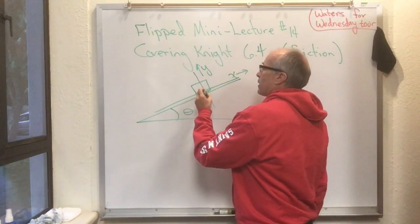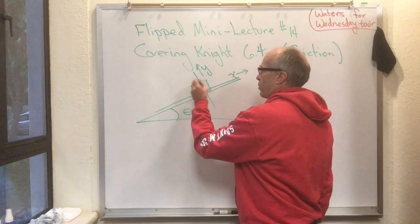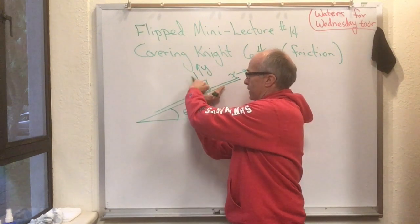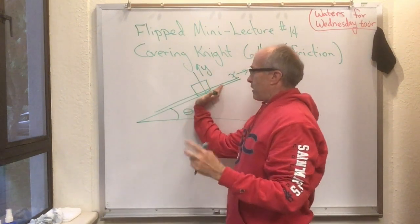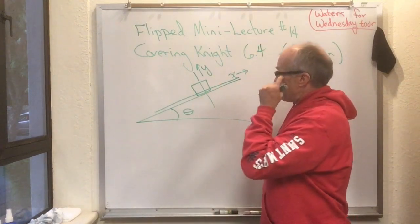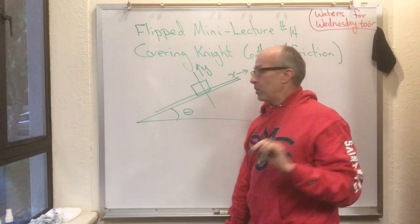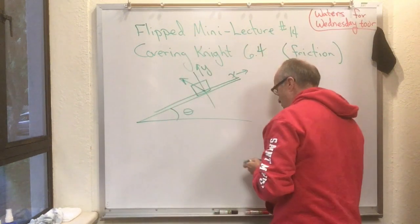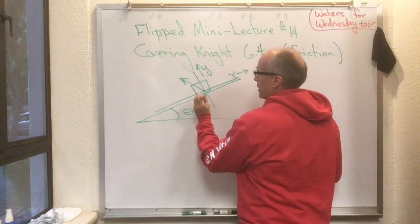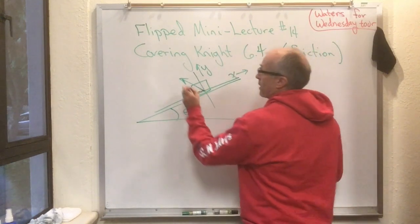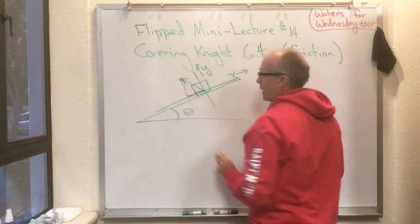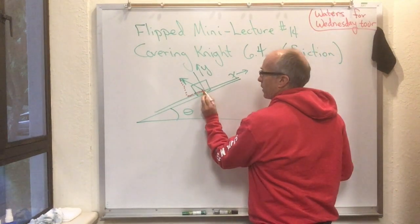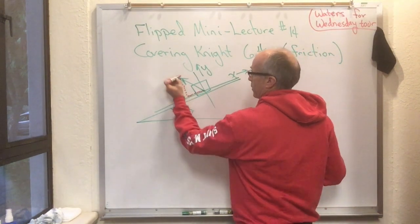The plane is going to push on the box somehow or other. The plane is in contact with this box and it's going to push in some direction depending on what the box is doing. But we can always choose to resolve that into whatever that vector is. We can always resolve that vector into a component that is parallel to the x-axis and a component that is parallel to the y-axis. We put the x-axis parallel to the plane, so that means a component that's parallel to the plane and a component that's perpendicular to the plane.